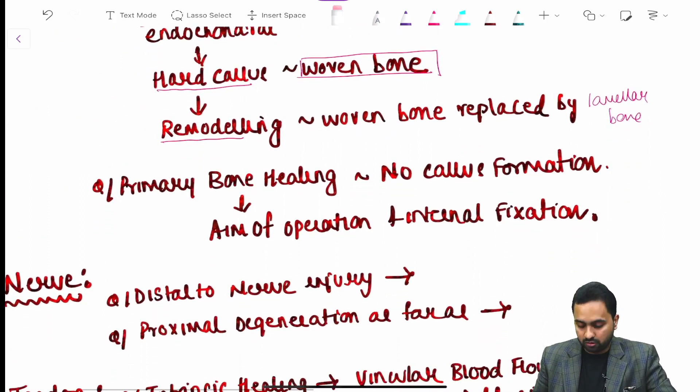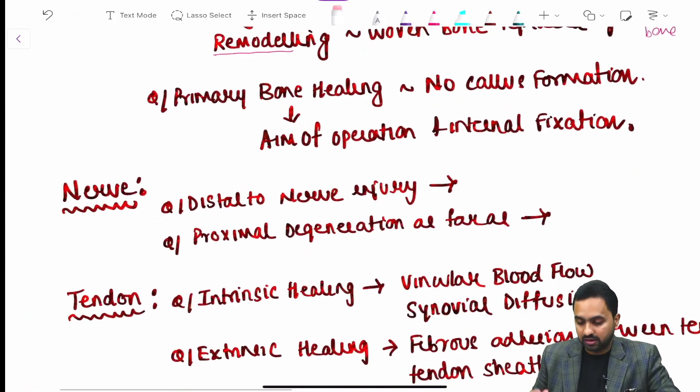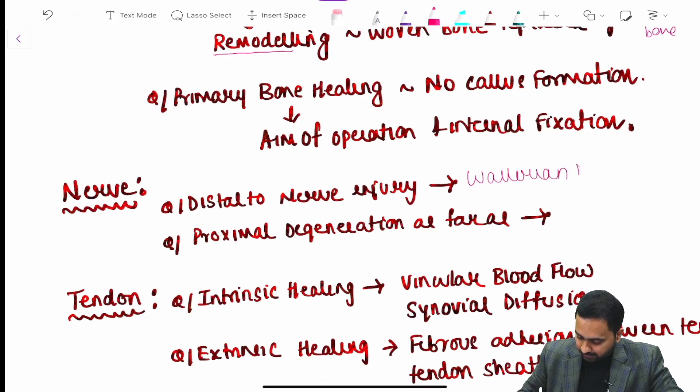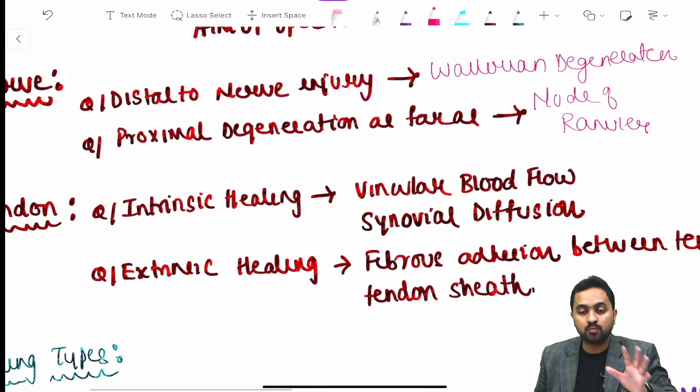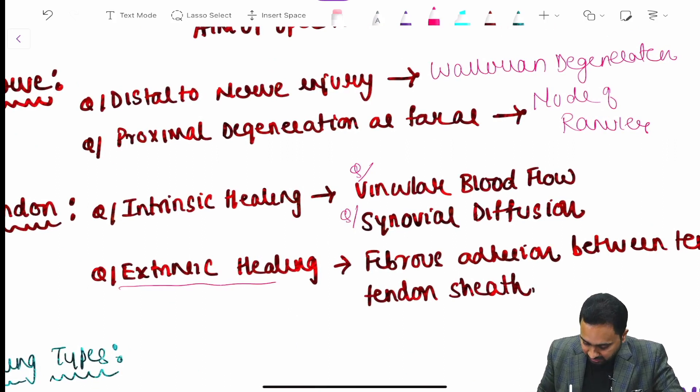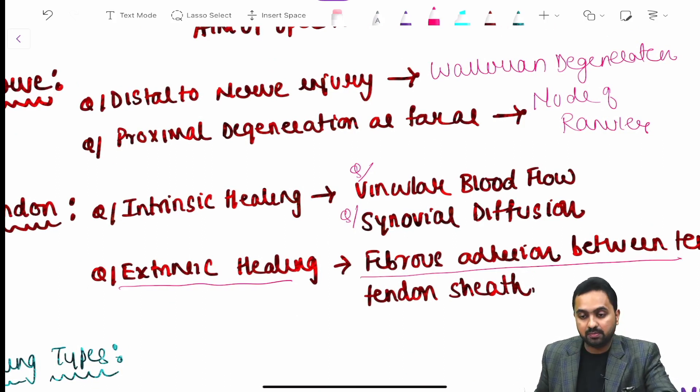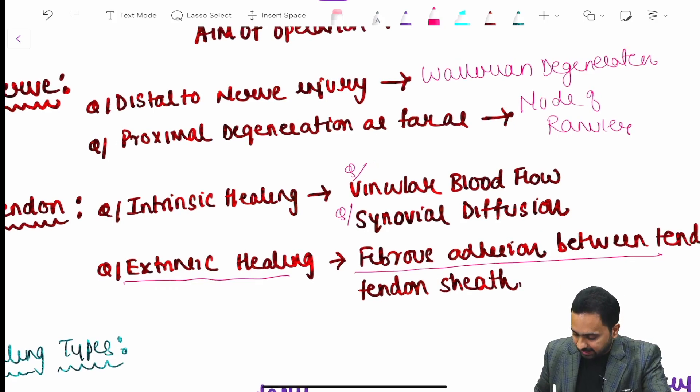In your nerve distal to nerve injury occurs Wallerian degeneration and proximal degeneration moves as far as your node of Ranvier. Regarding the tendons the intrinsic healing, the two important concepts include your vinicular blood flow and your synovial diffusion and the extrinsic healing includes your fibrous adhesion between your tendon and the tendon sheath.